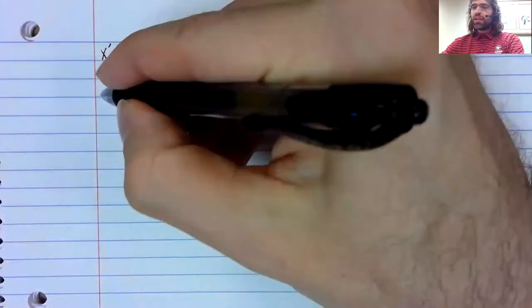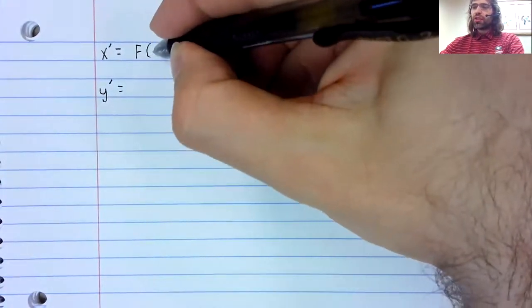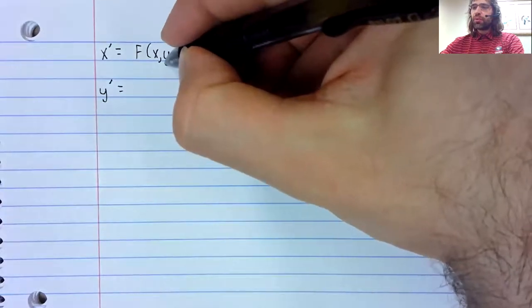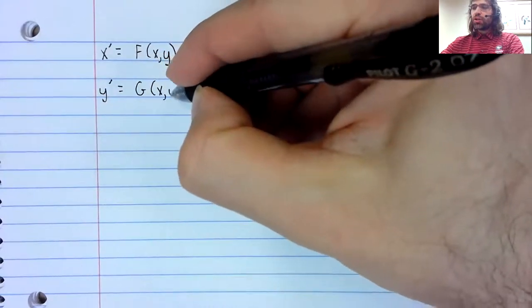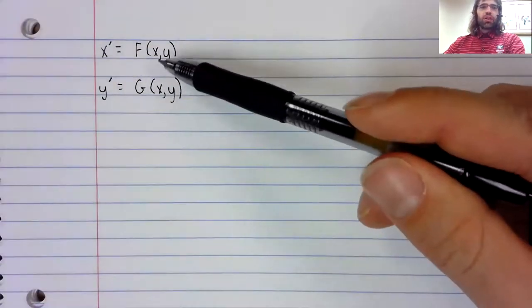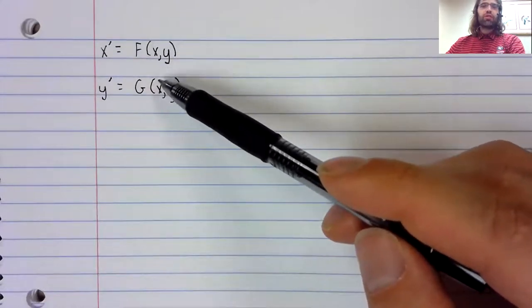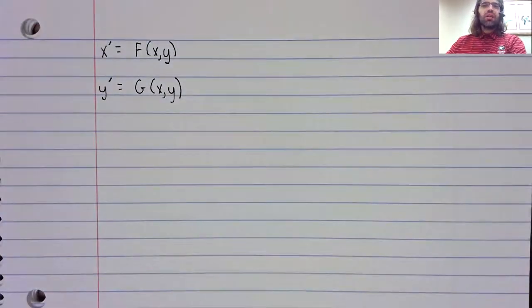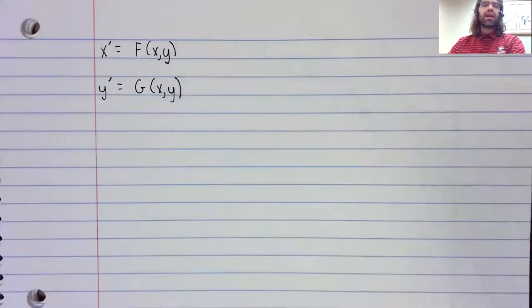Suppose you have a system of differential equations. For simplicity, we'll look at two equations and two variables, but we could generalize this material. And these are autonomous, so the T variable isn't appearing over here on the right, but they don't need to be linear. We could have sines or cosines or exponentials or whatever here.